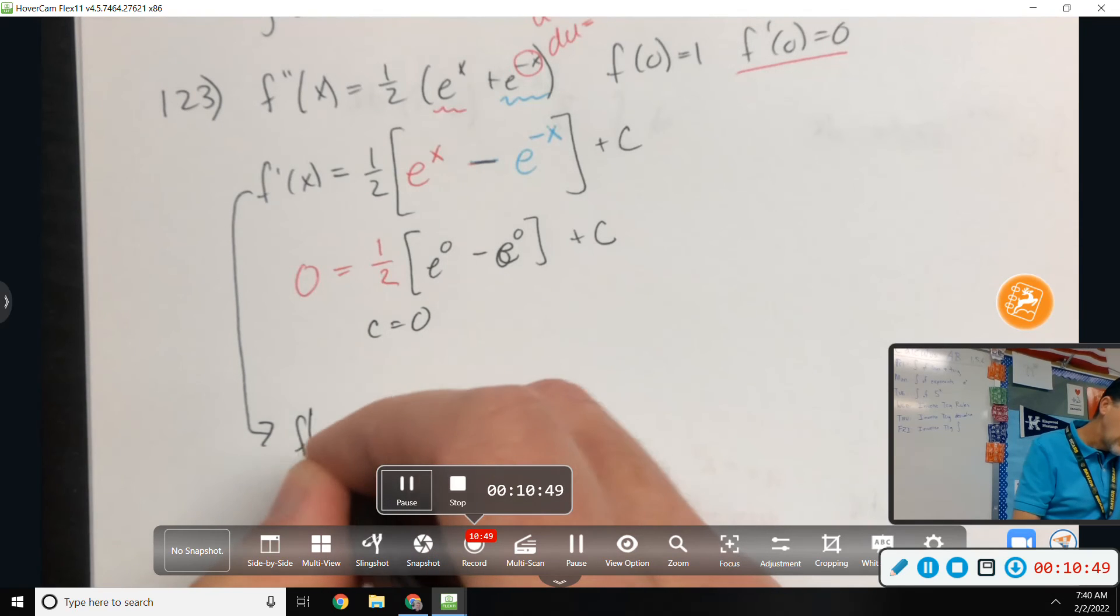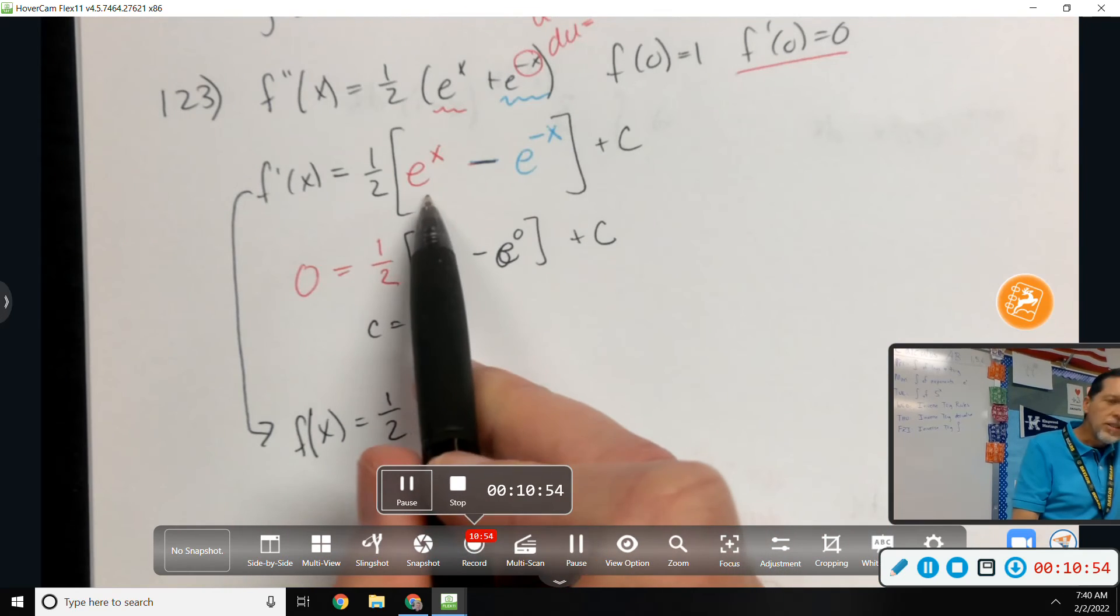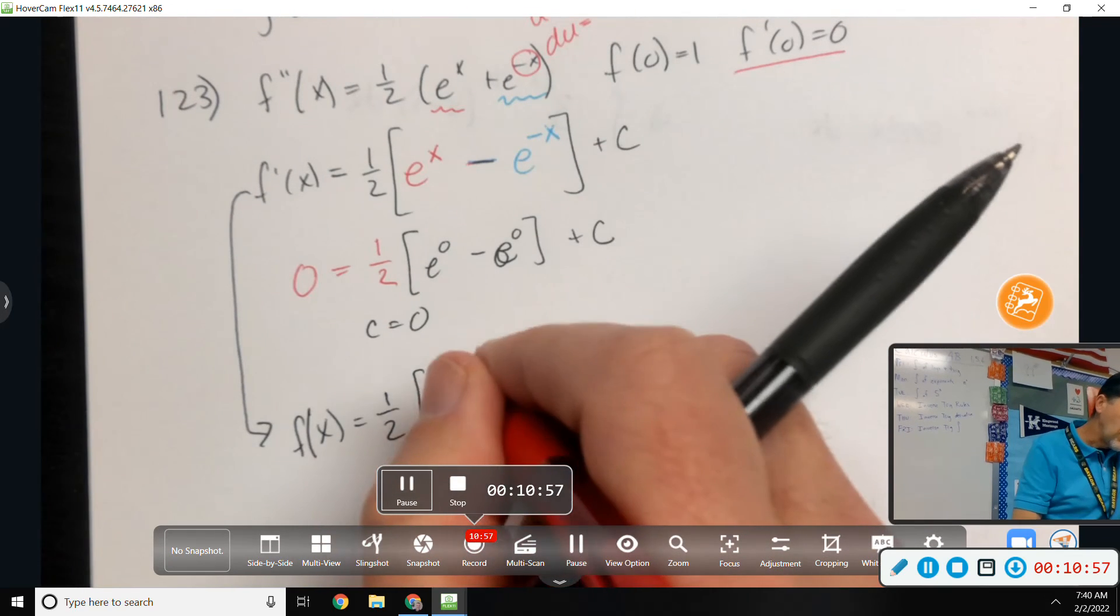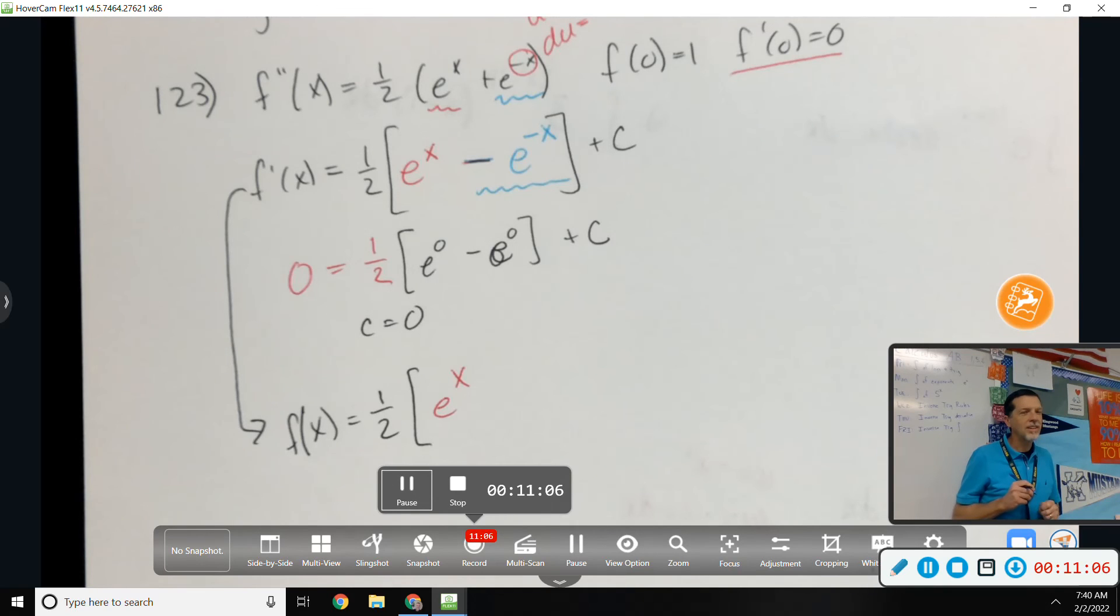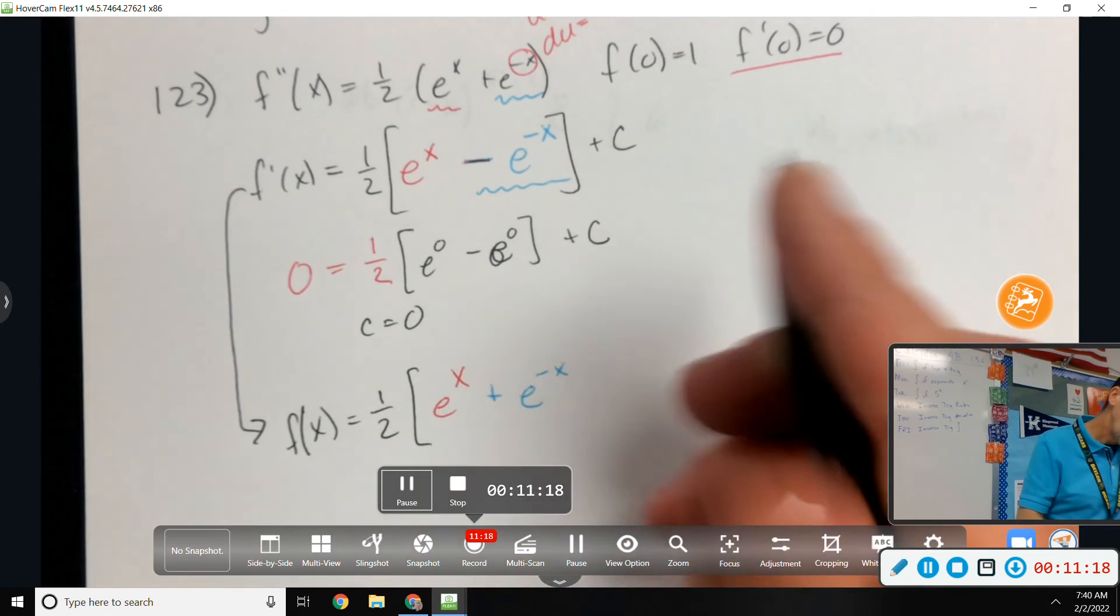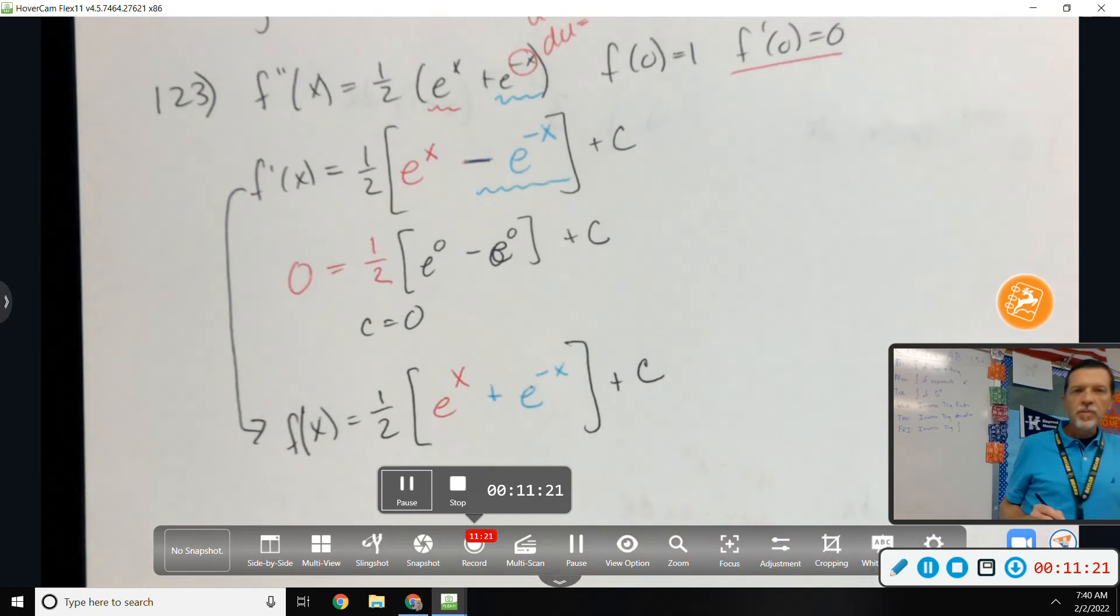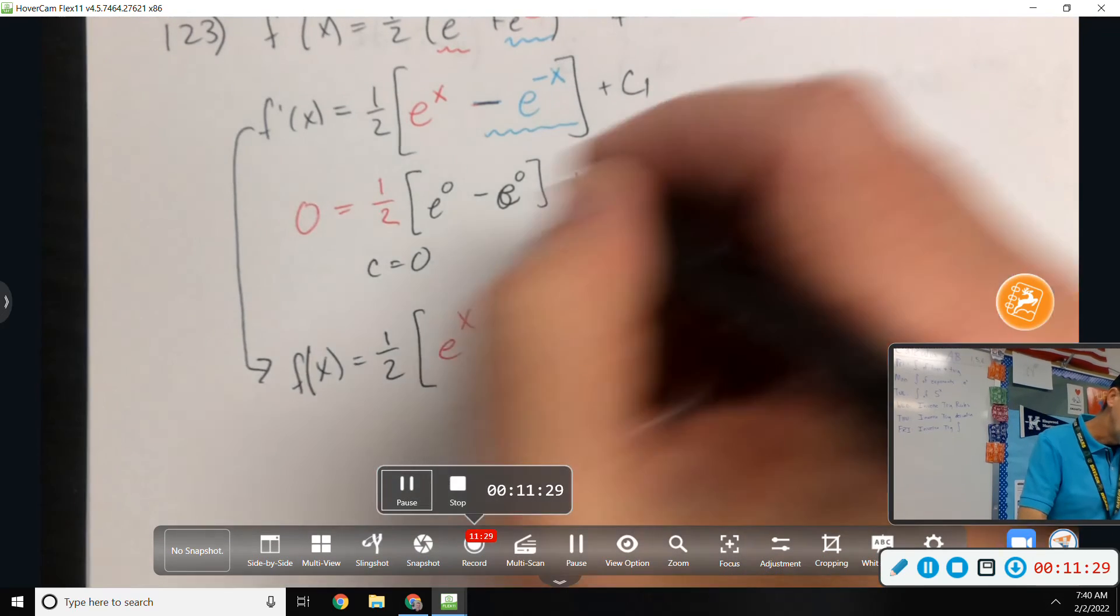Integrate again. Again, I'm going to leave the 1 half alone. The integral of e to the x is still e to the x. The integral of negative e to the negative x is going to be positive e to the x. The chain rule off that negative is just changing the sign back and forth. Plus c. Again, that's a different c. But if you're comfortable that we've already resolved the first c, then we can call it c. If it bugs you, then call them c1 and c2.